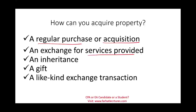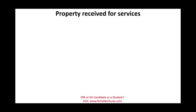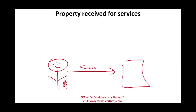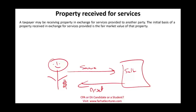Let's start with property received for services. Simply put, you want to buy an asset but don't have the money to pay for it. What you can do is provide some sort of service to the seller, and the seller will give you the asset after you've provided the service — for example, painting their business, mowing their lawn, or fixing their computers. A taxpayer may receive property in exchange for services provided to another party.